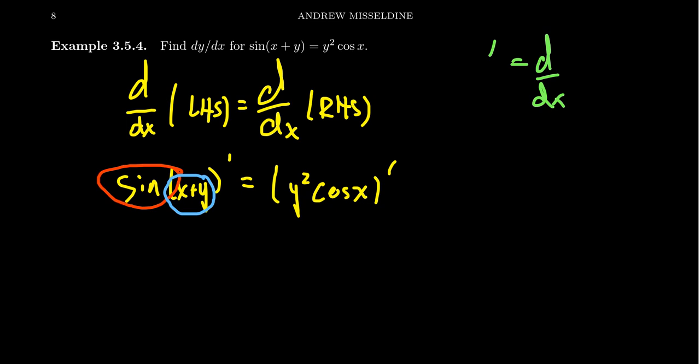We have these two functions we have to take care of. We first take the outer derivative — what's the derivative of sine? The derivative of sine is cosine. The angle stays the same; it's the original angle of x plus y. But then, when you take the inner derivative — that is, the derivative of the inside function — we have to take the derivative of x plus y. So I'll just leave it there as x plus y prime.